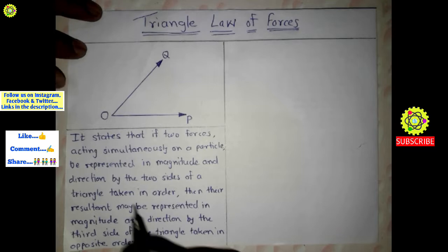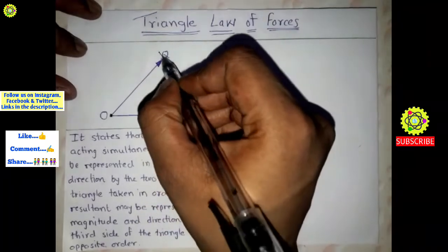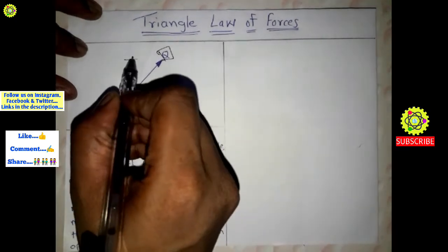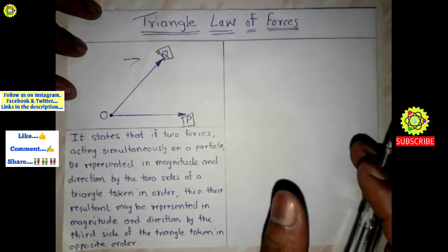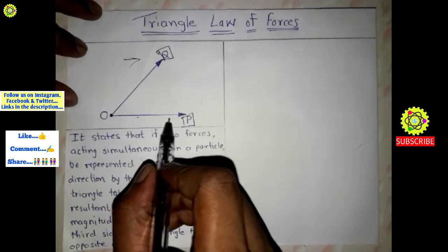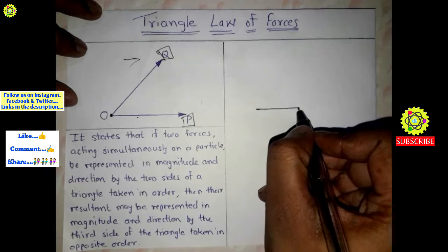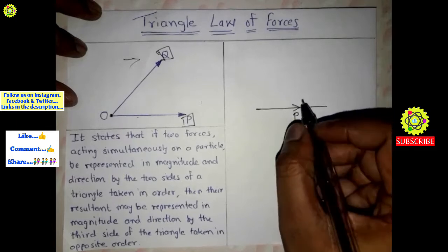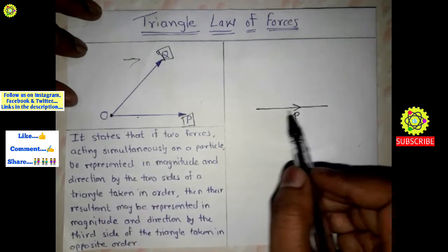Suppose this is a particle O. On this particle, force P is applied and force Q is applied in the same direction — in the right direction. Now I am drawing a straight line: here is force P acting in this direction, and both forces have the same direction.